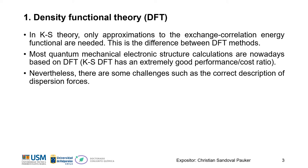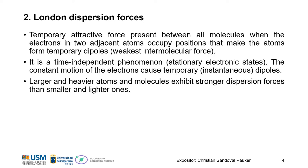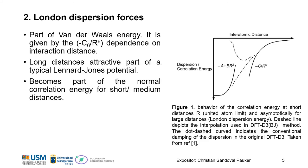That is what we are going to talk about today. The London dispersion forces are a temporary attractive force that is present between all molecules when the electrons in two adjacent atoms occupy positions that make the atoms form temporary dipoles. It is the weakest intermolecular force. Also, it is a time-independent phenomenon, so we have stationary electronic states, and it is the constant motion of electrons that causes these temporary instantaneous dipoles. Of course, larger and heavier atoms exhibit stronger dispersion forces than smaller and lighter ones. These dispersion forces are part of the Van der Waals energy, and it is given by the C6 over R6 dependence of the interaction distance.